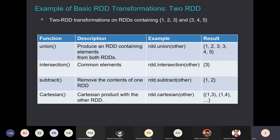We talked about single RDD operations. Now you often need to deal with two RDDs — things like join, set intersection, set union, subtraction — all kinds of operations requiring two RDDs. Let's look at transformation operations on two RDDs. In our case, one RDD contains one, two, three and the other contains three, four, five. Union of two RDDs is rdd1.union(rdd2). Similarly you can get intersection, subtraction, cartesian product, and all kinds of set operations involving pairs of RDDs.